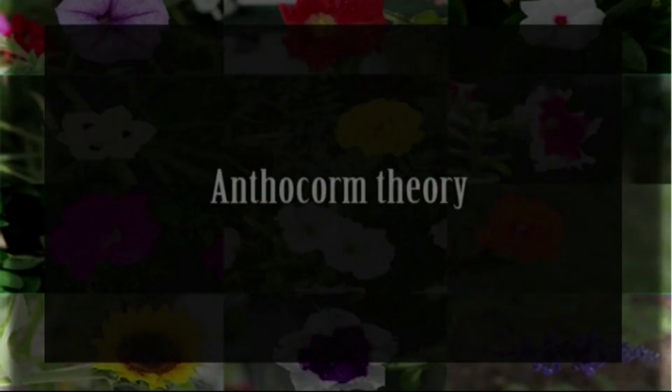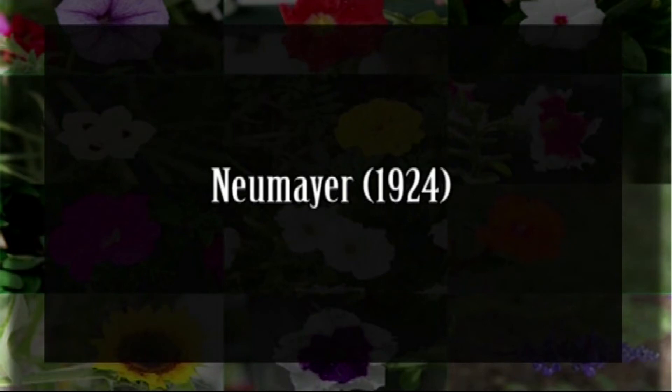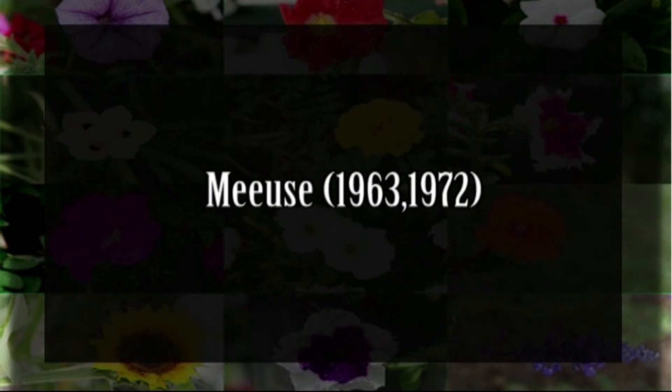The existing theories about the origin of angiosperms include the Anthocom Theory, a modified version of the Pseudanthial Theory. It was proposed by Neu-Mayer in 1924 and strongly advocated by Meeuse. According to this theory, the angiosperm flower has several separate origins, meaning angiosperms are polyphyletic in origin. In most magnoloids and their dicotyledonous derivatives, they are modified pluriaxial systems that originated from the Gnetopsids via the Piperales, whereas modification of an originally uniaxial system gave rise to flowers of Chloranthaceae.